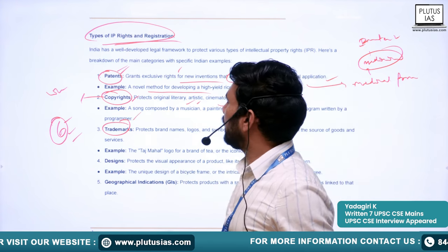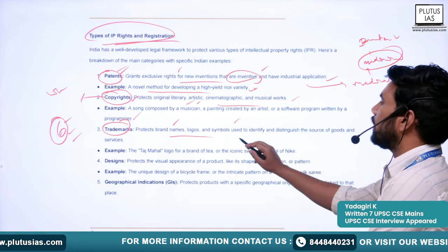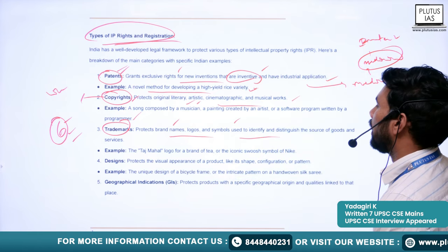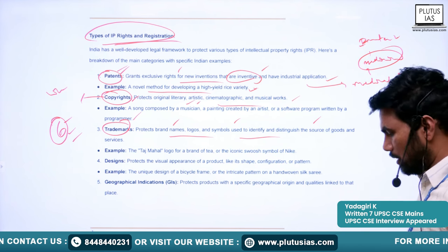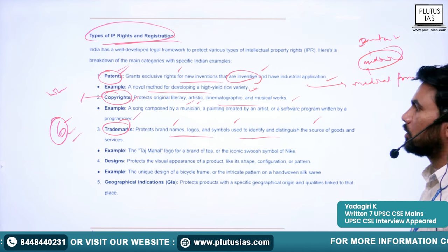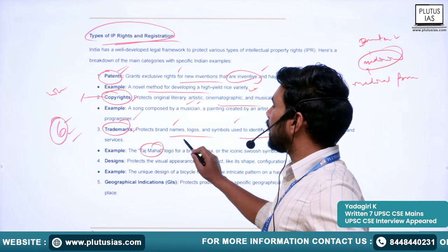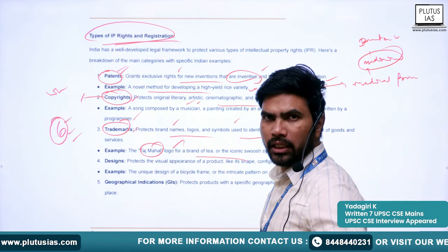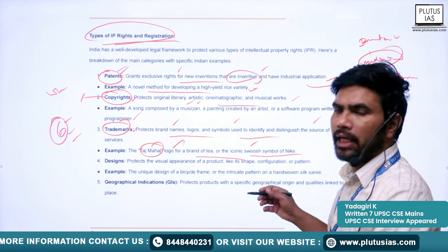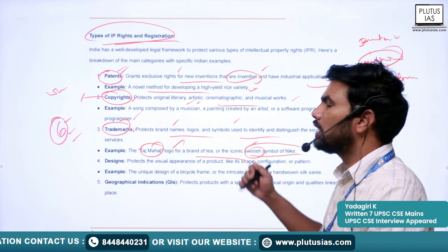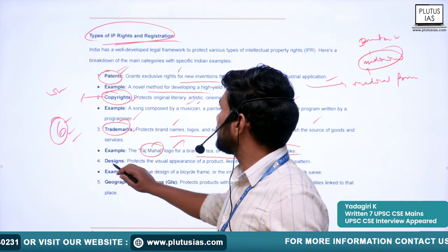The third type is trademarks. Trademarks protect brand names, logos, and symbols used to identify and distinguish the source of goods and services. Examples include the Taj Mahal logo on Taj Mahal tea, or the iconic swoosh symbol on Nike.